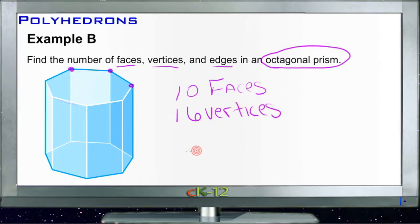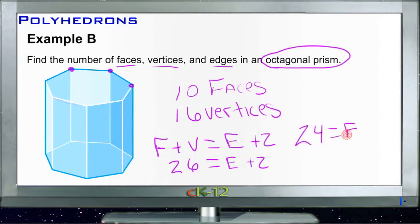We can use Euler's theorem, which says that the number of faces plus the number of vertices is equal to the number of edges plus two. We have 10 faces and 16 vertices, so that gives us a total of 26, and that's equal to the number of edges plus 2. If we subtract 2 from each side, we get 24 is equal to the number of edges.